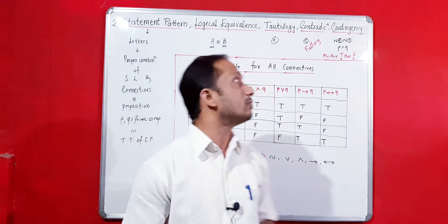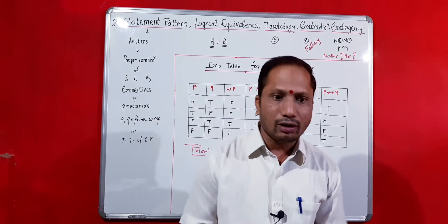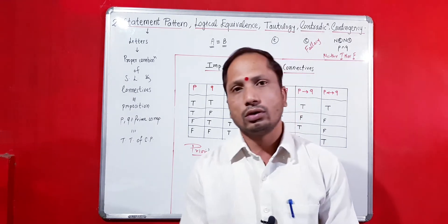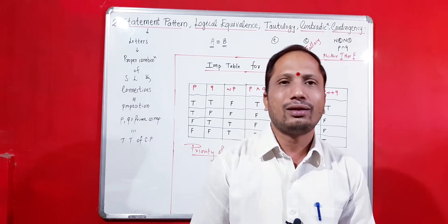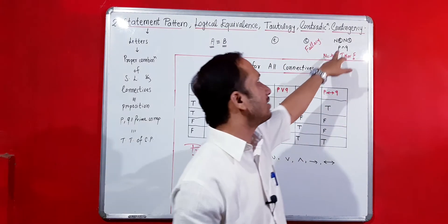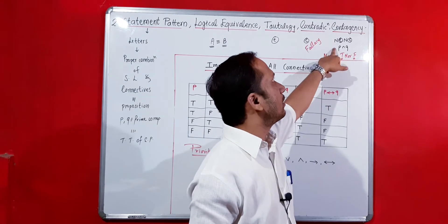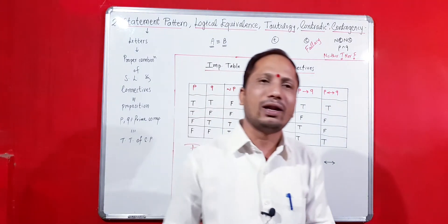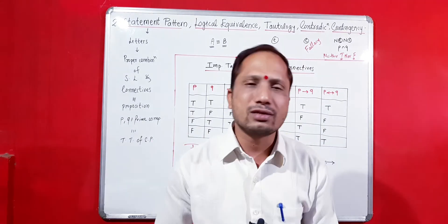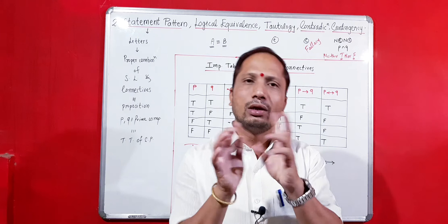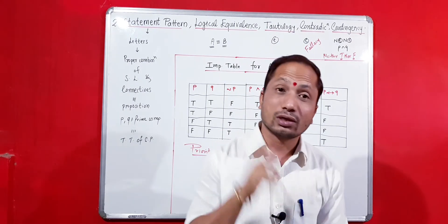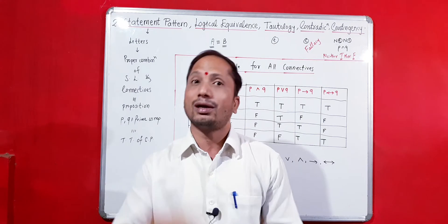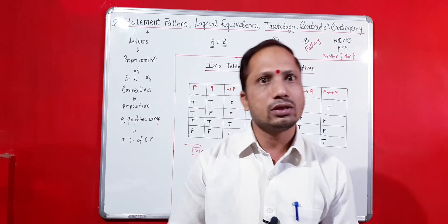The final term is contingency. Contingency means whenever the truth values of the final statement pattern are neither all true nor all false — they are a combination of both true and false. You can represent it by P and Q. Whatever truth values are present in the last column are a mix of true and false.